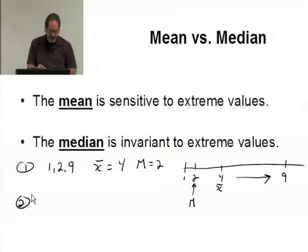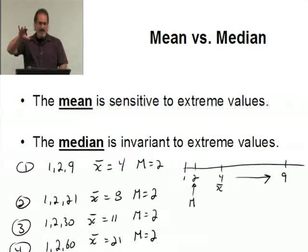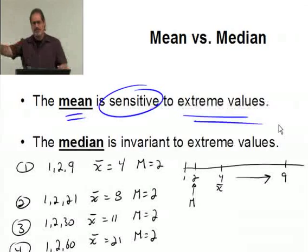Suppose I had data values 1, 2, and 21. X bar is 8, the median is 2. Suppose I had values 1, 2, and 30. X bar is 11, the median is 2. How about if I had data values 1, 2, and 60? X bar is 21, the median is 2. See, the median is invariant. I took that last value and I kept making it bigger and bigger, and left the other values alone. The mean kept getting pulled out farther and farther. The median being invariant, it doesn't move, it just sits right there. That's what we mean when we say the mean is sensitive to extreme values. It gets pulled in the direction of those extreme values, whereas the median is invariant.